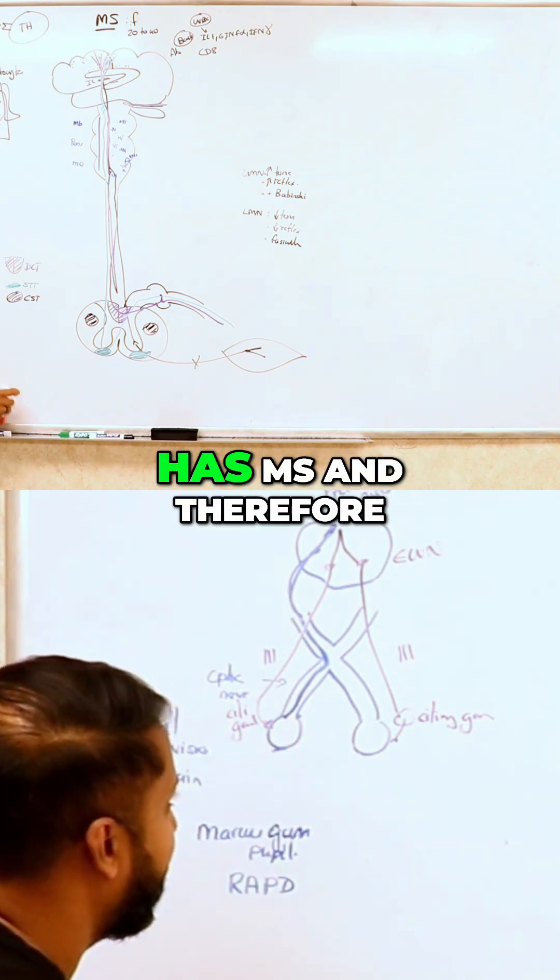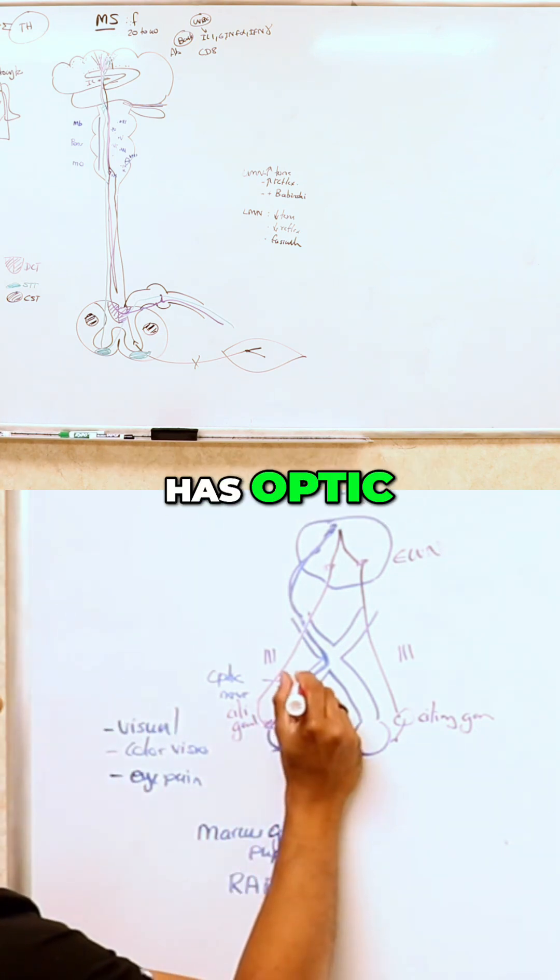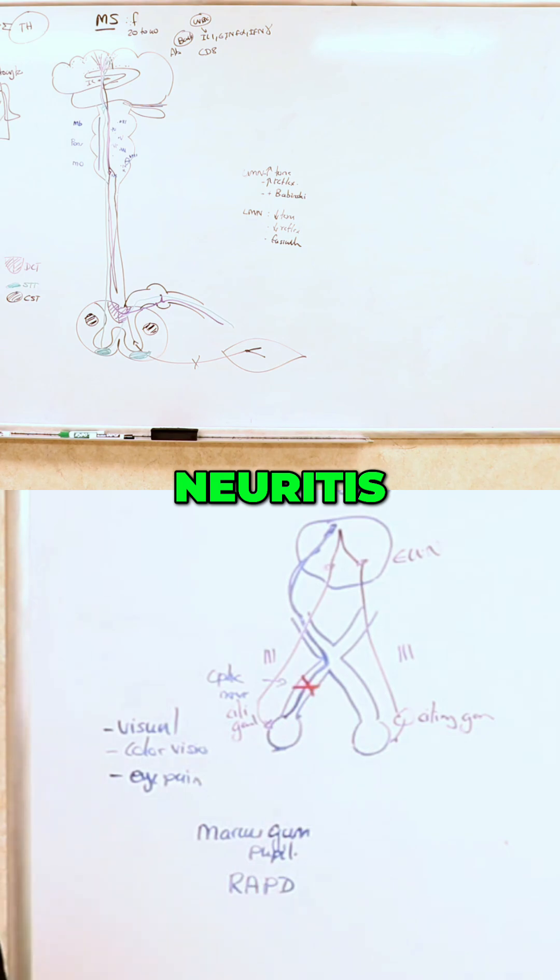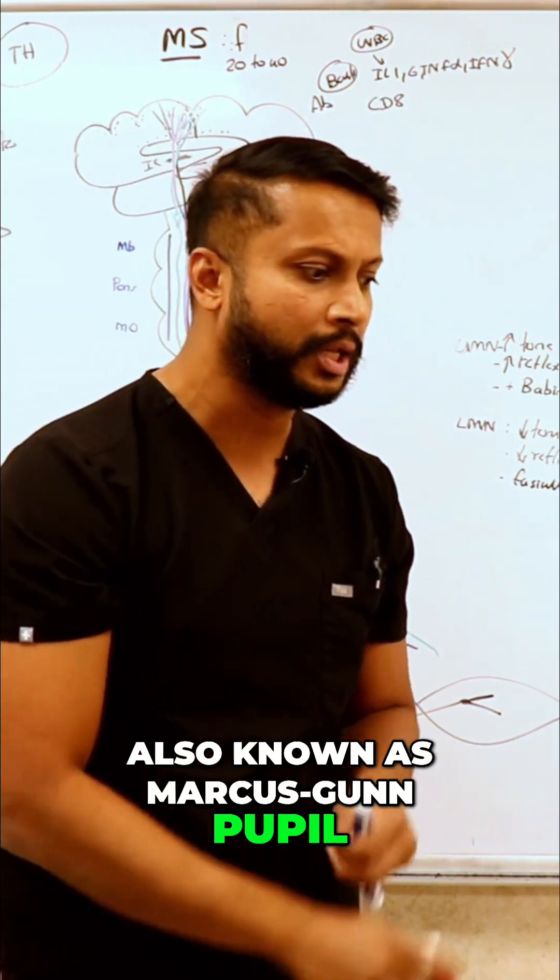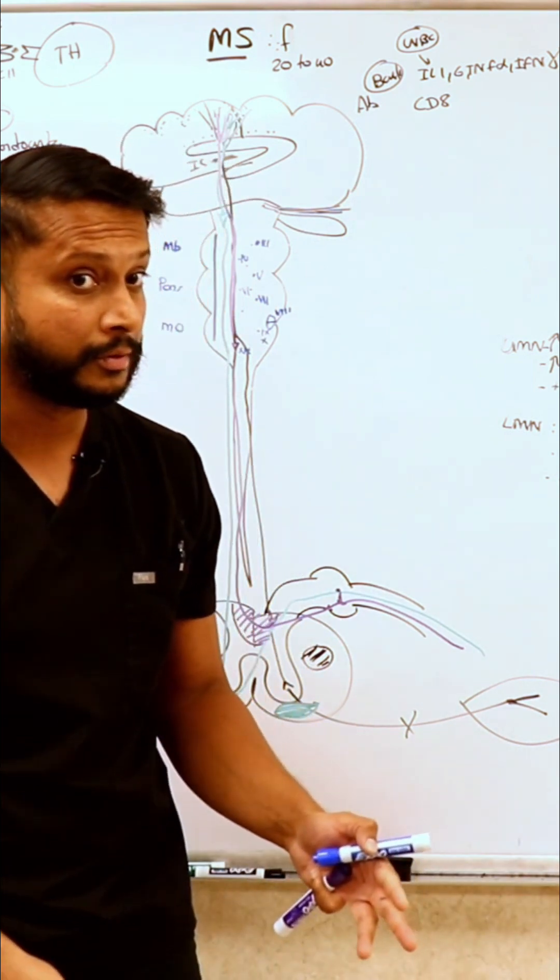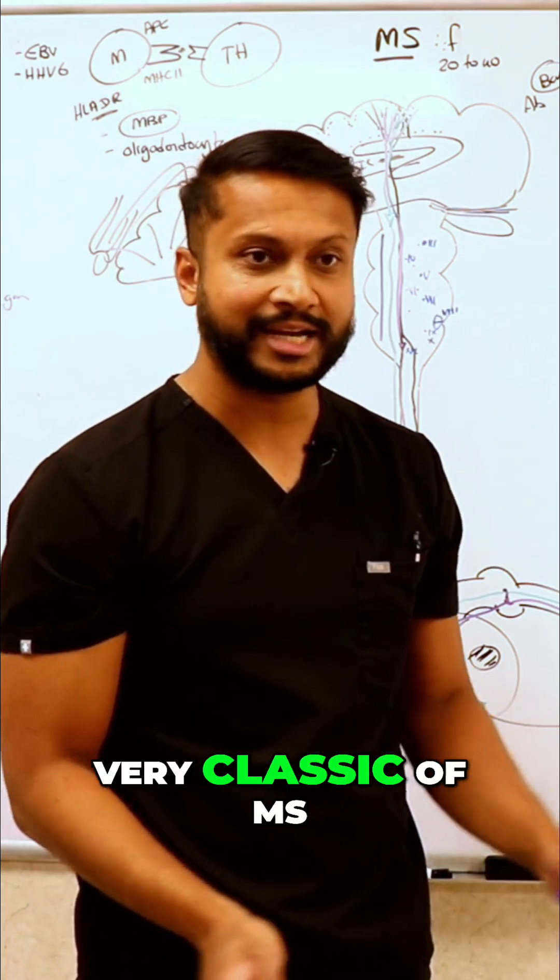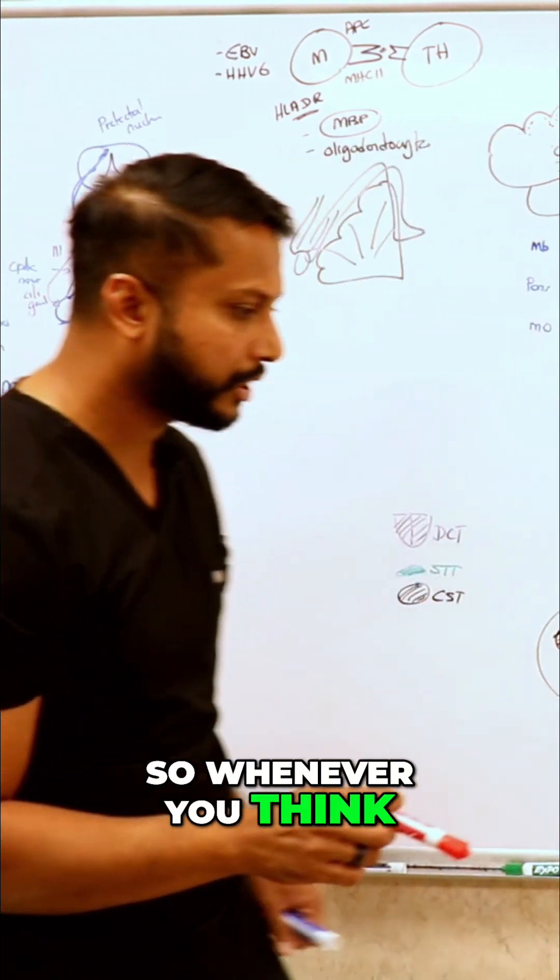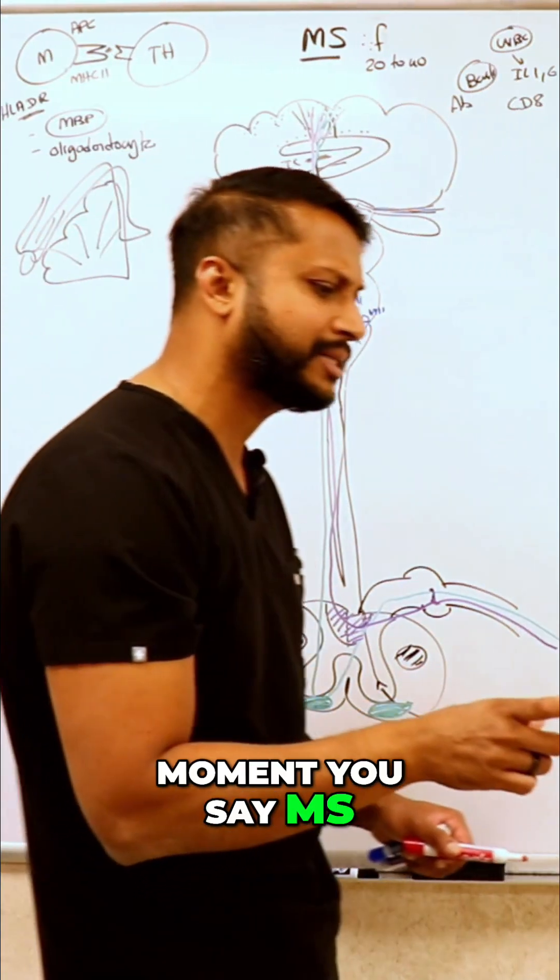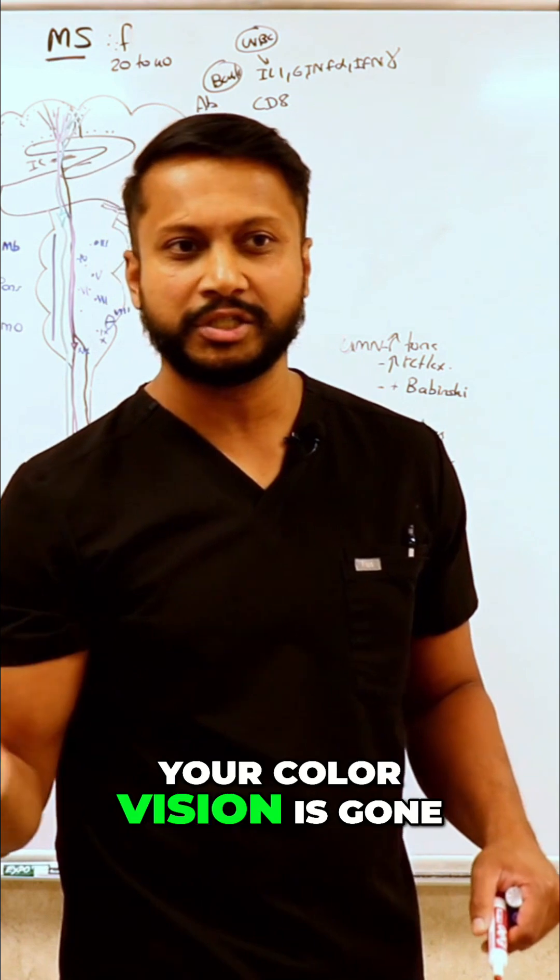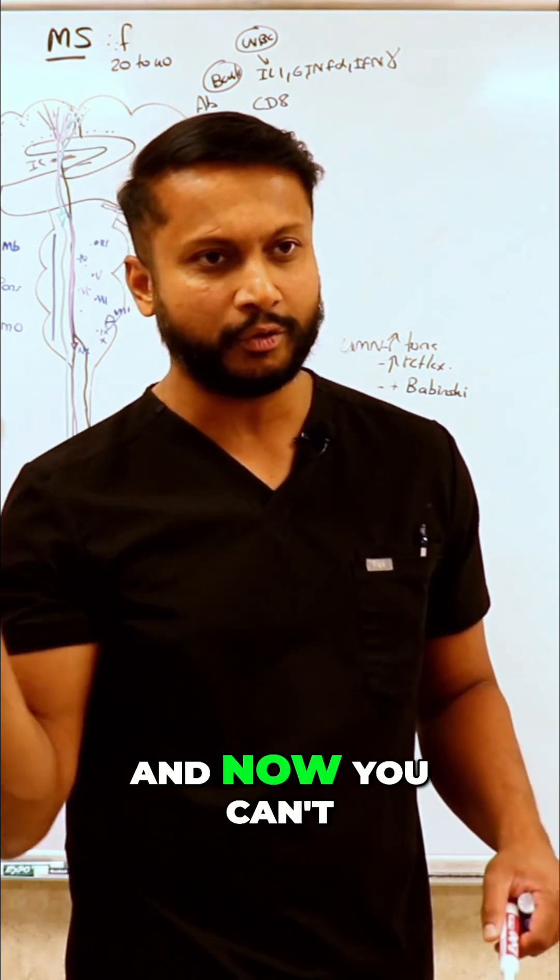This is known as your relative afferent pupillary defect, also known as Marcus Gunn pupil. Very classic of MS. Whenever you think of Marcus Gunn pupil, you think of MS. The moment you say MS, you think eyes: your eyes are painful, your color vision is gone, your vision is affected, and now you can't constrict. You've got a Marcus Gunn pupil.